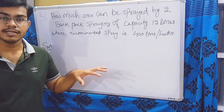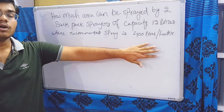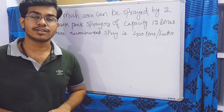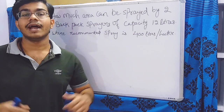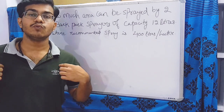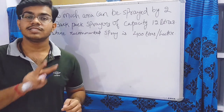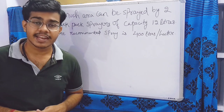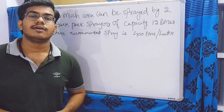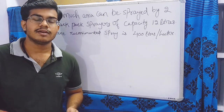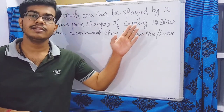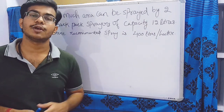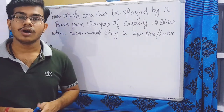The recommended spray for that particular crop is 400 liters per hectare — meaning we require 400 liters of weedicide to be sprayed in one hectare of land. With two tanks of 12 liters each, we want to find how much area can be sprayed at once.